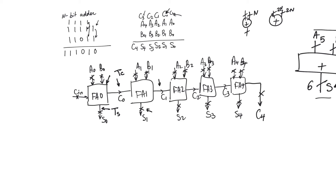Now, A1 and B1 are ready at time 0, but full adder FA1 does not start calculation until it has all of its three inputs available. It also needs input C0 to be able to start calculating. So it will have to wait for C0 before it starts calculating. So C1 is only ready at TC plus TC, at 2TC.